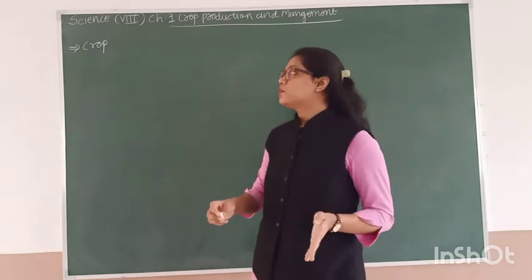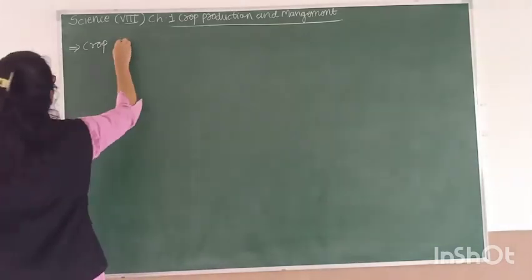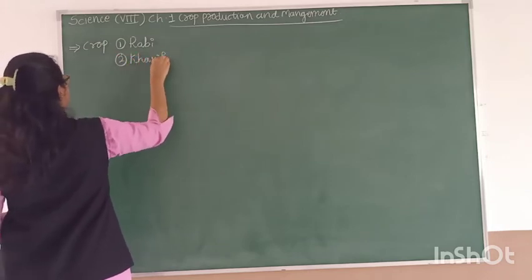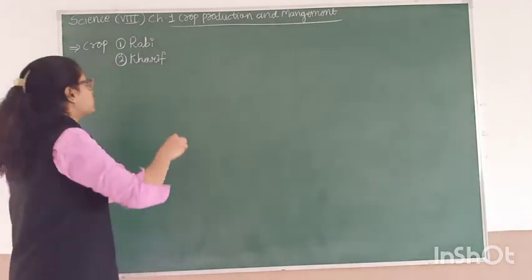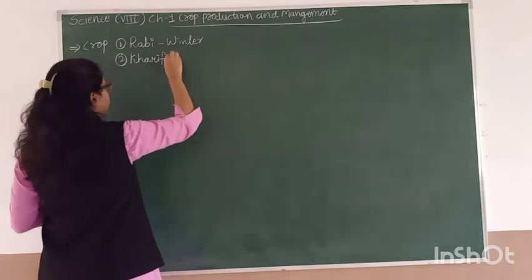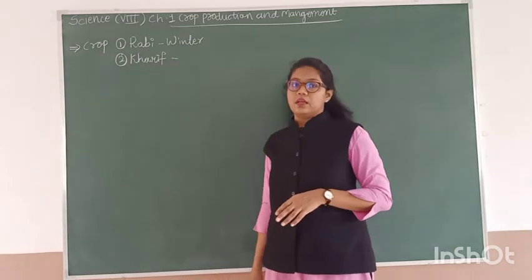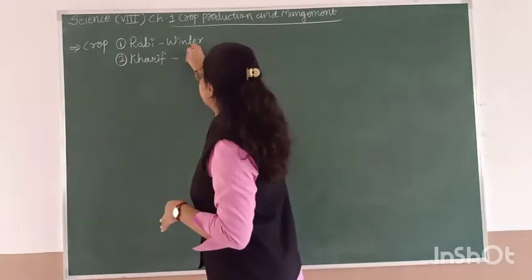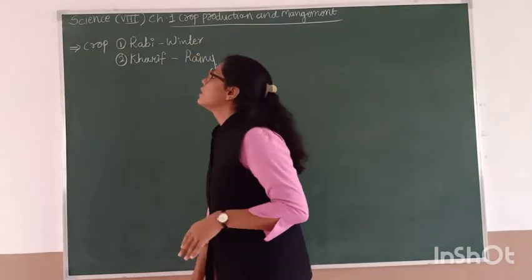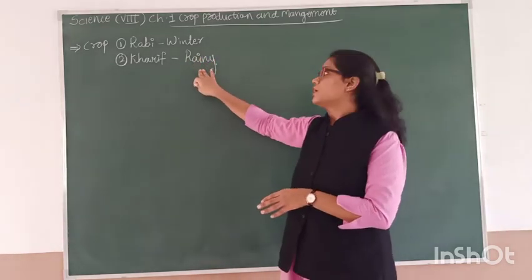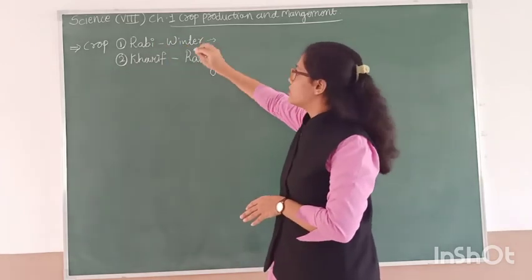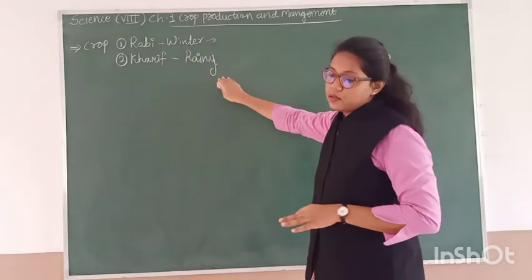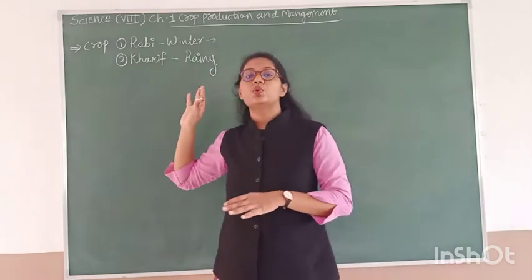We have also studied about the two types of crops. The first is the Rabi crop, which is the winter season crop, and the second is the Kharif crop, which grows during the rainy season. The Rabi crops grow from October to March, and the Kharif crops grow from June to September.